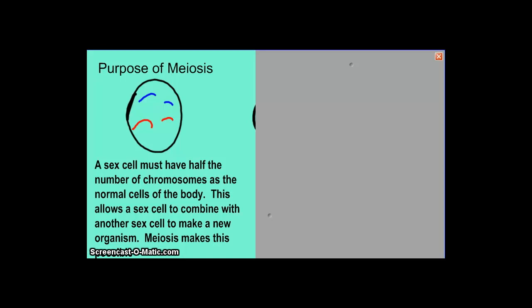Meiosis is used by organisms that reproduce sexually, so they have a sperm and an egg cell. The normal cell in their body is not a sex cell and can't be used as one, because in humans there are two copies of each type of chromosome — a red and a blue copy of the long one, and a red and a blue copy of the short one. You couldn't use that cell as a sex cell because combining it with your partner's cell would create an individual with four copies of each chromosome, which doesn't work. So we need a way to cut the chromosome number in half, and meiosis makes that possible.